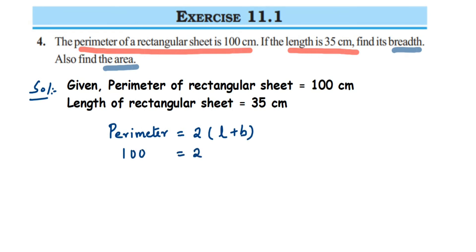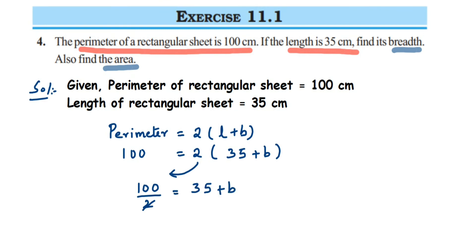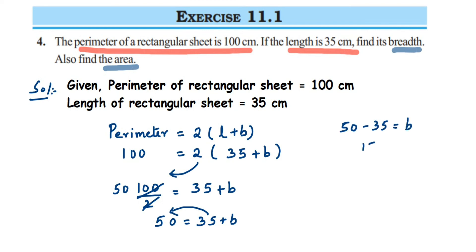We have length which is 35 plus breadth, which we have to find. This is like an equation. I'm going to transpose 2 to the other side — it comes as division. So 100 divided by 2 is 50, giving us 50 = 35 + b. Transposing 35 to the other side, it gets subtracted: 50 minus 35 equals b. So breadth equals 15 centimeters.